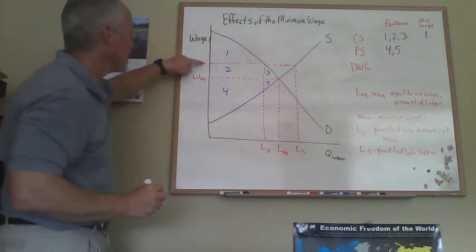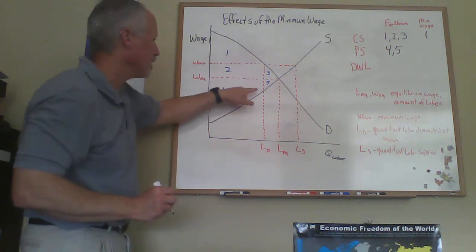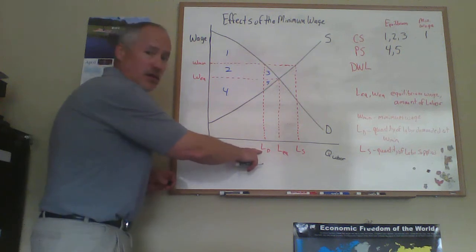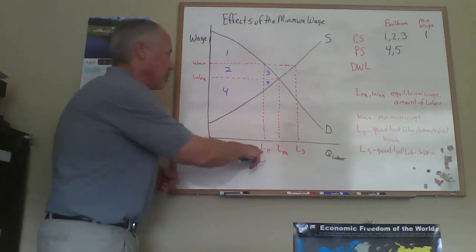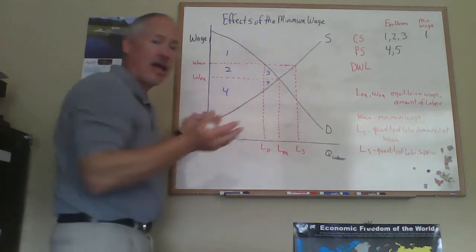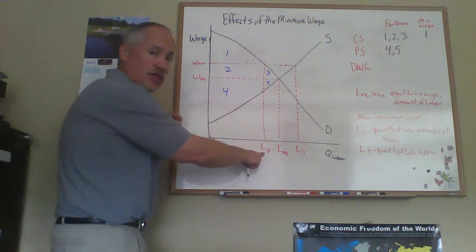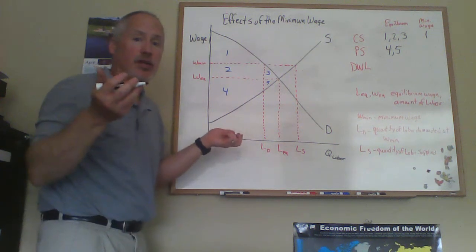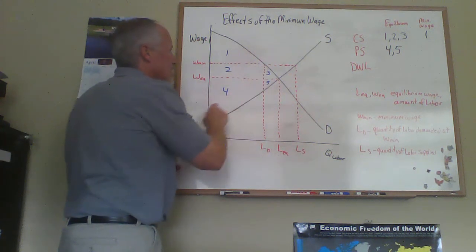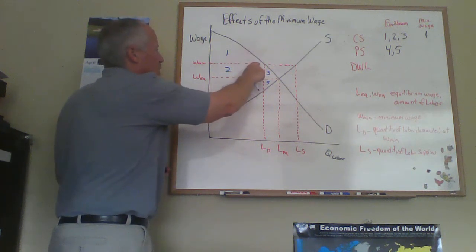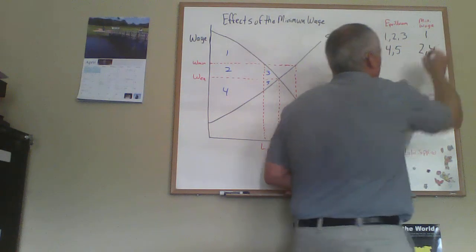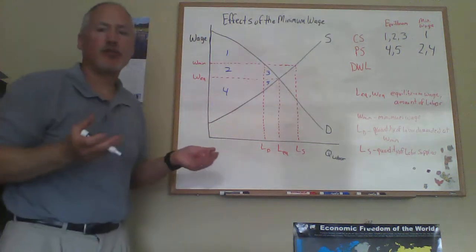Producer surplus would be the area below the price and above the supply curve. With a price control in place, it can only be up to the number of units actually traded. So firms only hire LD units of workers, and you can't have surplus on units that don't get traded. The producer surplus would be under W-min and above the supply curve up to LD — that would be areas 2 and 4. Areas 3 and 5 are the deadweight loss — the inefficiency of the price control.